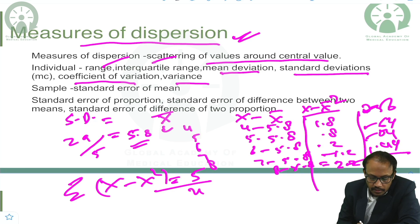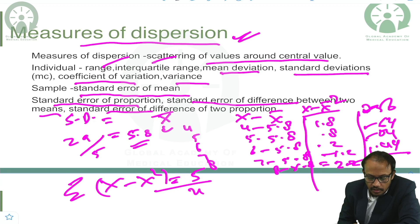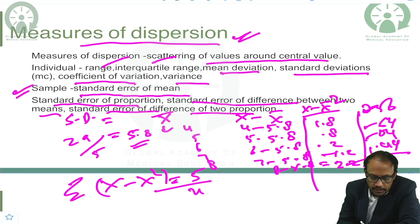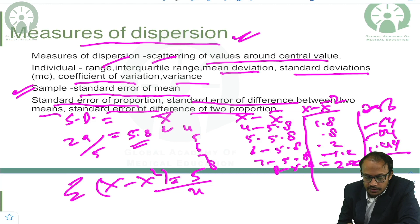In the case of a sample, we use standard error of mean, standard error of proportion, standard error of difference between two means, and standard error of difference between two proportions. All of these standard errors are used in the sample context. In sample size estimation, the standard deviation is usually quite large.